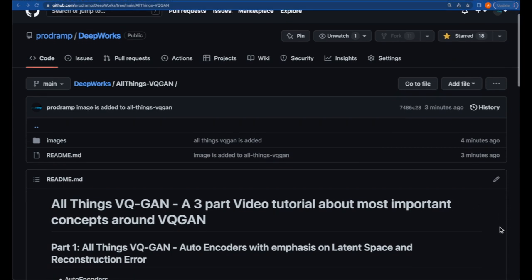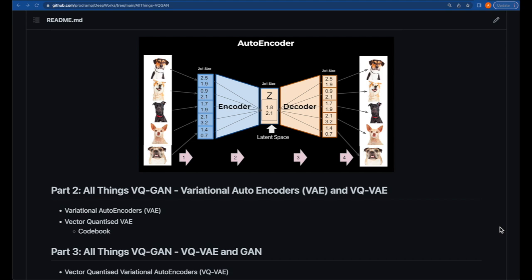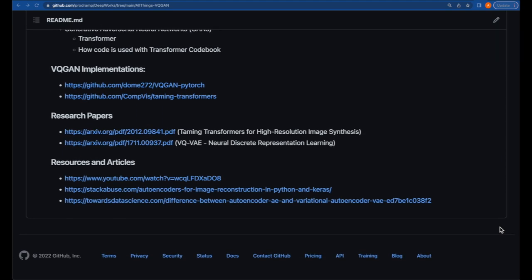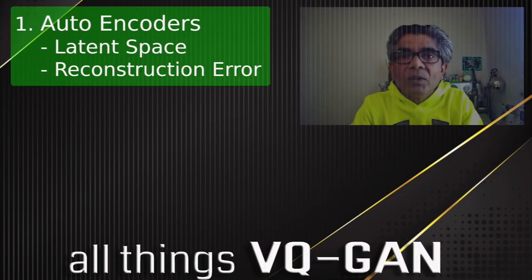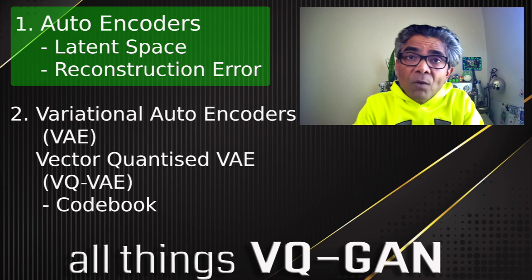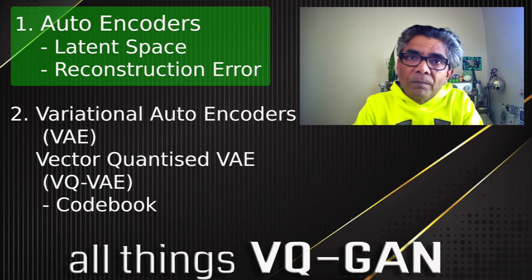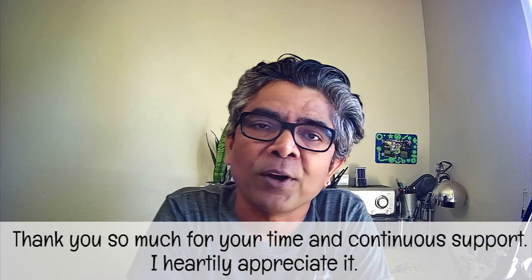All the content related to this tutorial is located in the 'All Things VQGAN' folder at the DeepWorks repo on my ProdRAMP GitHub account. In this first part of the VQGAN series, we have covered autoencoders with special emphasis on latent space and the reconstruction error. Now we are ready to learn the variational autoencoder and vector quantized variational autoencoder with special emphasis on the codebook. I hope you have enjoyed this first series and I look forward to seeing you in the second part of this tutorial.